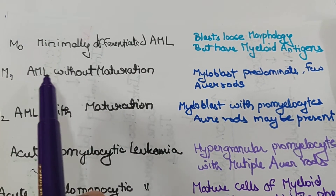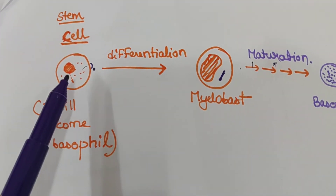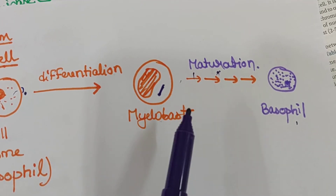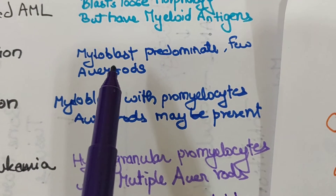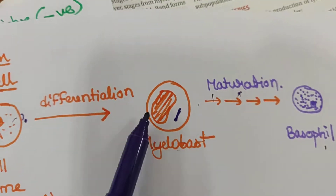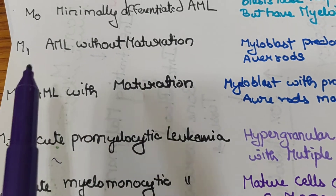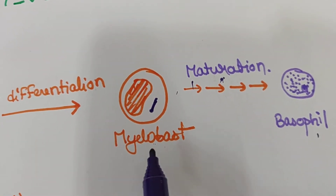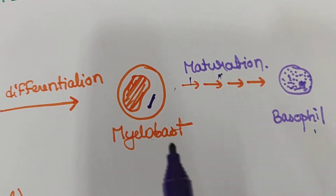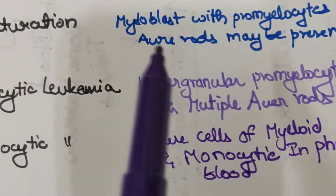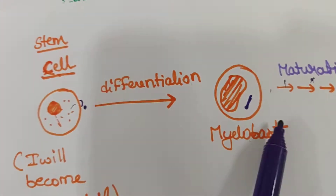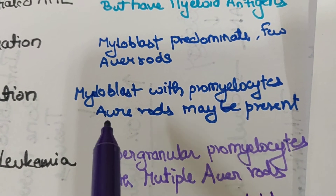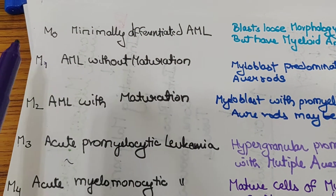M1 is AML without maturation and M2 is AML with maturation. AML without maturation means the myeloblast stage is present but maturation is blocked — myeloblasts are predominant and Auer rods are characteristic. AML with maturation means the maturation has progressed further, so we see myeloblasts and promyelocytes; Auer rods may also be present.